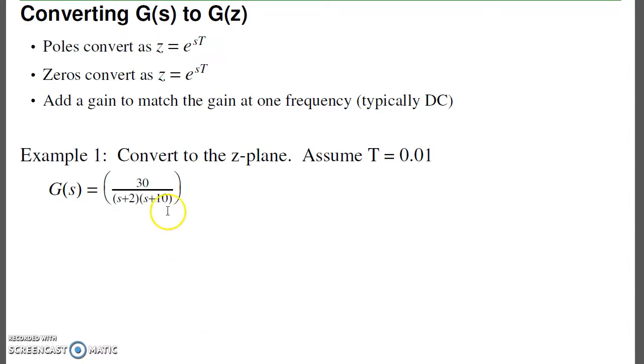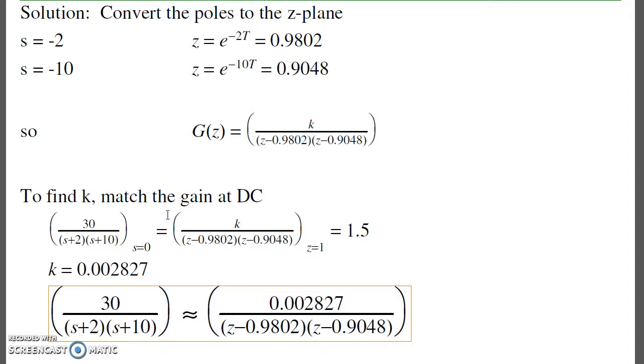For example, if I have this filter in the s-plane, I want to find its discrete-time equivalent. First, assume a sampling period. If the sampling period is 10 milliseconds, I'll convert. My pole at s = -2 goes to z = e^(sT) = 0.9802. The pole at s = -10 becomes z = 0.9048. So my filter is in this form. This is the corresponding pole at s = -2, and this is the corresponding pole at s = -10.